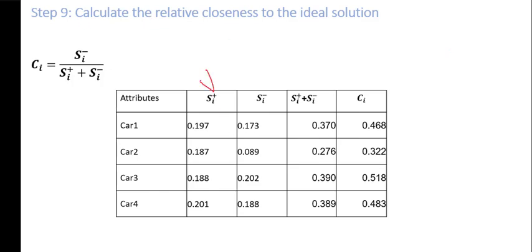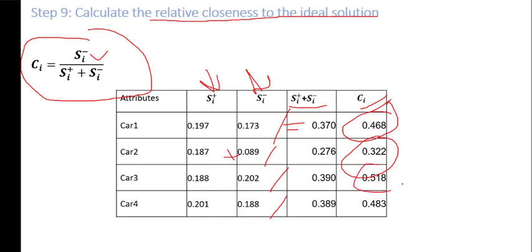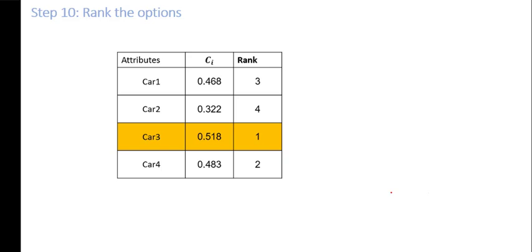Step number 9: once positive and negative ideal separations are calculated, the next step is to calculate relative closeness to the ideal solution. The formula is: C_i equals S_i− divided by (S_i+ plus S_i−). First we calculate S_i+ plus S_i− for each option, and then divide S_i− by that sum to get C_i.